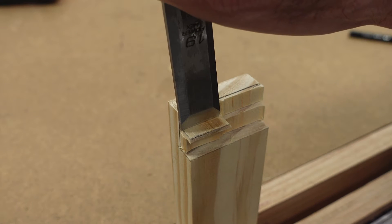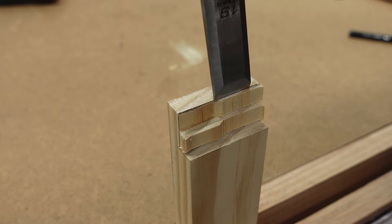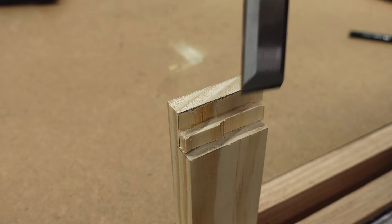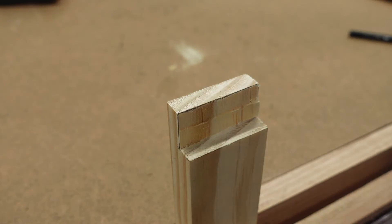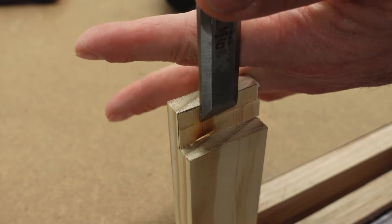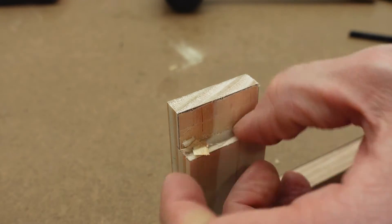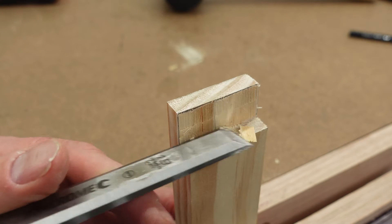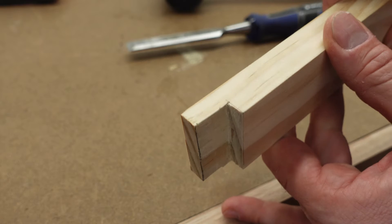When you get close to the line, use the groove made by the marking gauge to guide the chisel.